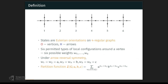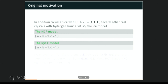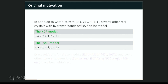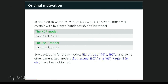In addition to water ice with ABC being 1,1,1, several other crystals with hydrogen bonds also satisfy the model. For example, the KDP model where A = B > C, or the KH2F model where A = B < C. The exact solutions for these models and some other generalized models have been obtained in the sense of the thermodynamic limit in physics.